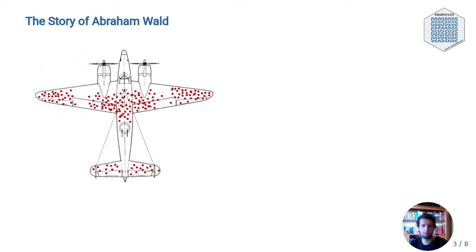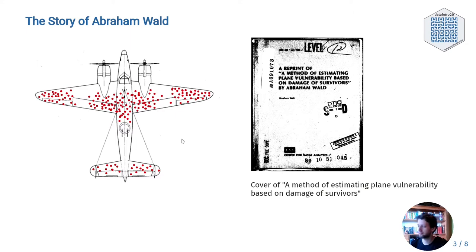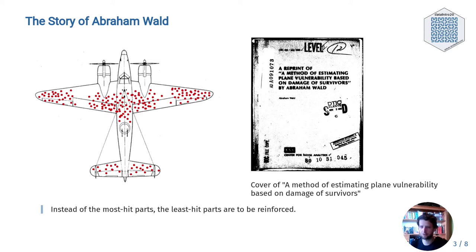But the pilots were in luck. The military also consulted with the statistics research group at Columbia University. A man named Abraham Wald worked there. In his now unclassified report, 'A Method of Estimating Plane Vulnerability Based on Damage of Survivors,' he argues against the generals. Instead of the most hit parts, the least hit parts are to be reinforced. The reason for this seemingly counterintuitive result is what is known as survivorship bias. The data collected contained only survivors — those planes that sustained damage not severe enough to hinder them from returning. The aircraft that were hit in other places simply didn't make it back. Consequently, Wald advised to reinforce the engines and the fuel tanks.